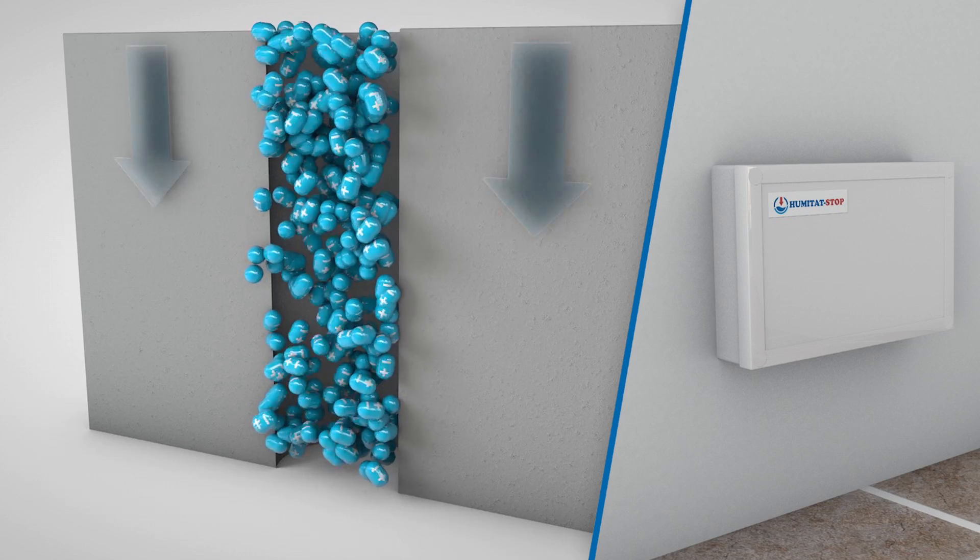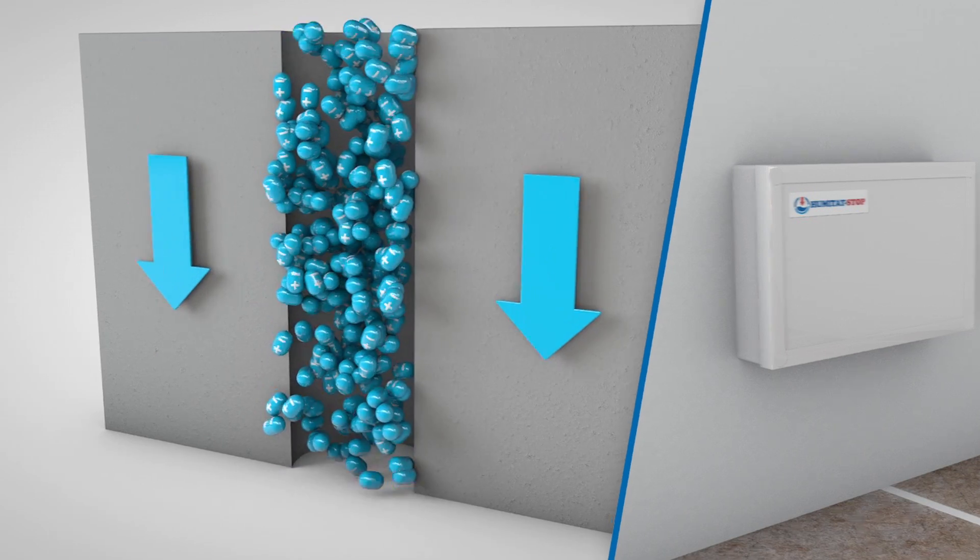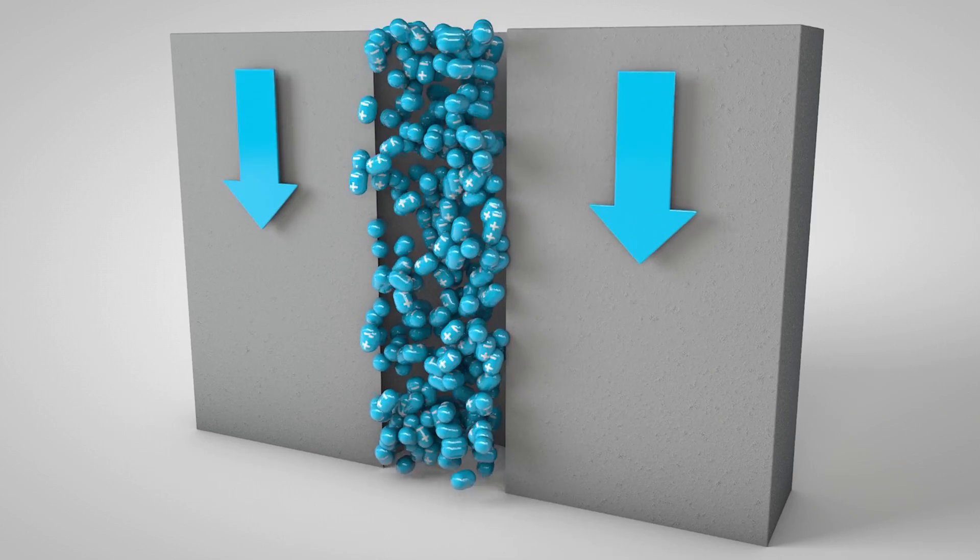Thus its orientation changes successively, and the water goes back down to the subsoil by force of gravity, as the capillarity effect is counteracted.